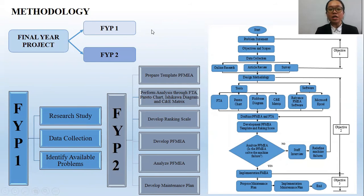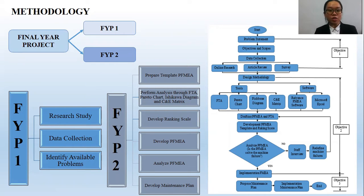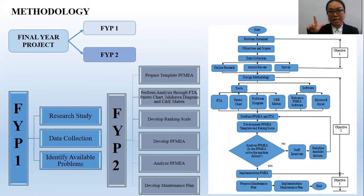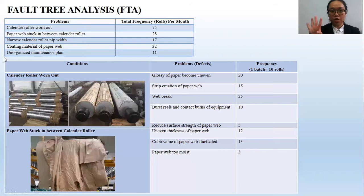Chapter 3: Methodology. The final year project consists of two parts: FYP1 and FYP2. During FYP1, three main activities are undergone — research study, data collection, and identifying available problems. For FYP2, six activities are carried out: preparing the PFMEA template, performing analysis through FTA, Pareto chart, Ishikawa diagram, and C&E metrics; developing ranking skills; developing PFMEA; analyzing PFMEA; and developing the maintenance plan.